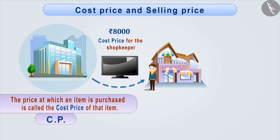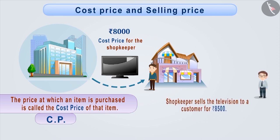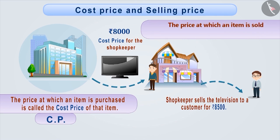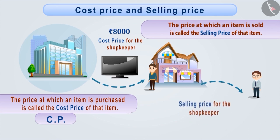He keeps the television for sale in his shop. Now, suppose the shopkeeper sells the television to a customer for Rs. 8500. The price at which an item is sold is called the selling price of that item. The selling price of the television for the shopkeeper is Rs. 8500. Selling price is simply written as SP.